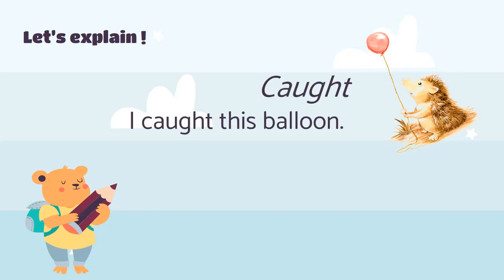Now we're going to say some sentences using our words. For the word 'caught' — can you see this animal? Do you remember its name from a previous reading lesson? Try to remember and send it to your teacher. The sentence is: 'I caught this balloon.' Can you see? He's holding it in his hand, which means he caught it. It happened in the past, so we say 'caught.'